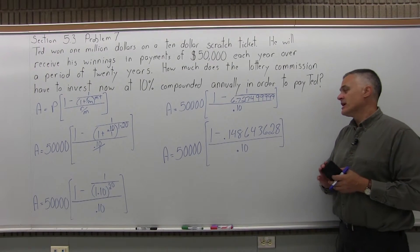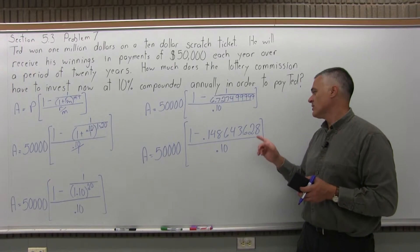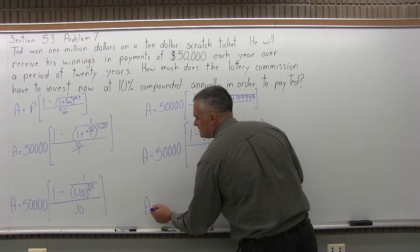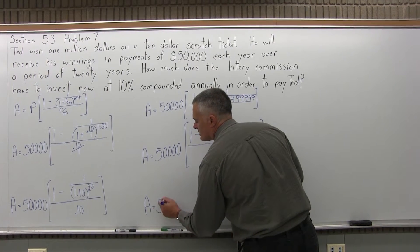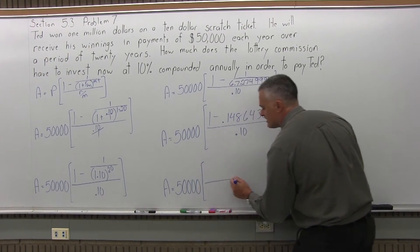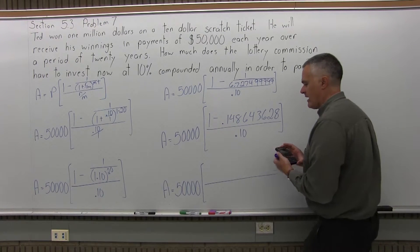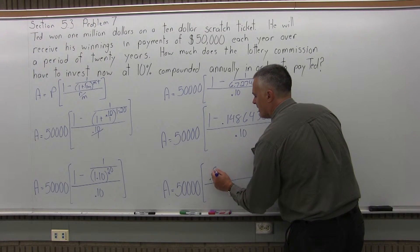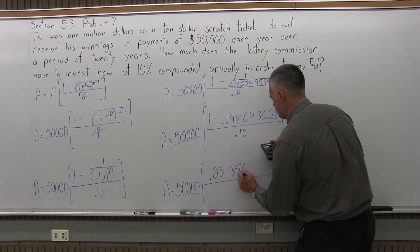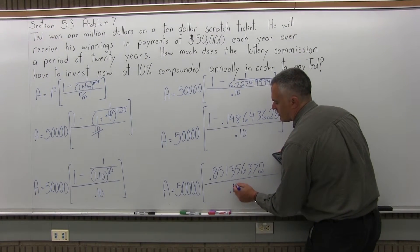So, in the numerator of the brackets, I have a subtraction to do: 1 minus .148643628. So, let me do that subtraction. I have A equals 50,000 times the brackets. And the brackets in the numerator will have .851356372, and in the denominator, .10.